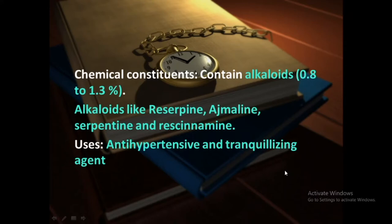Rauwolfia is used as an antihypertensive agent — it is helpful to lower blood pressure. It is also used as a tranquilizing agent. These are the two important uses of Rauwolfia. This covers synonym, source, chemical constituents and uses of Rauwolfia.